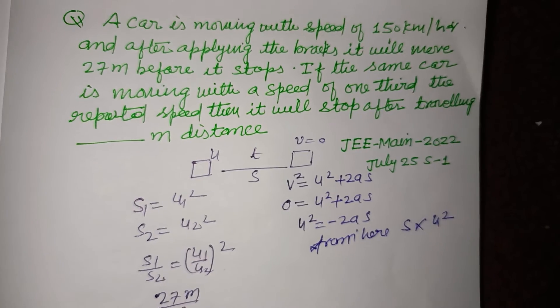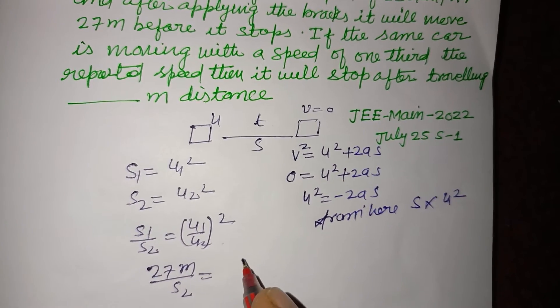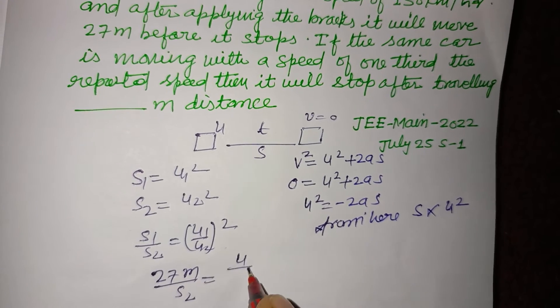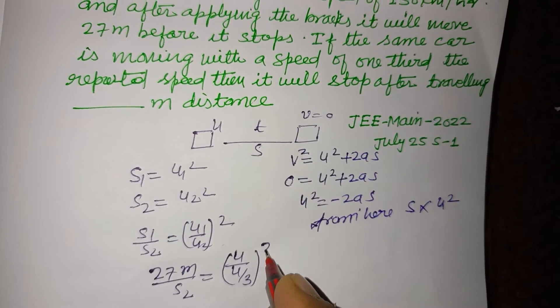So u1 is u and u2 is u by 3 whole square.